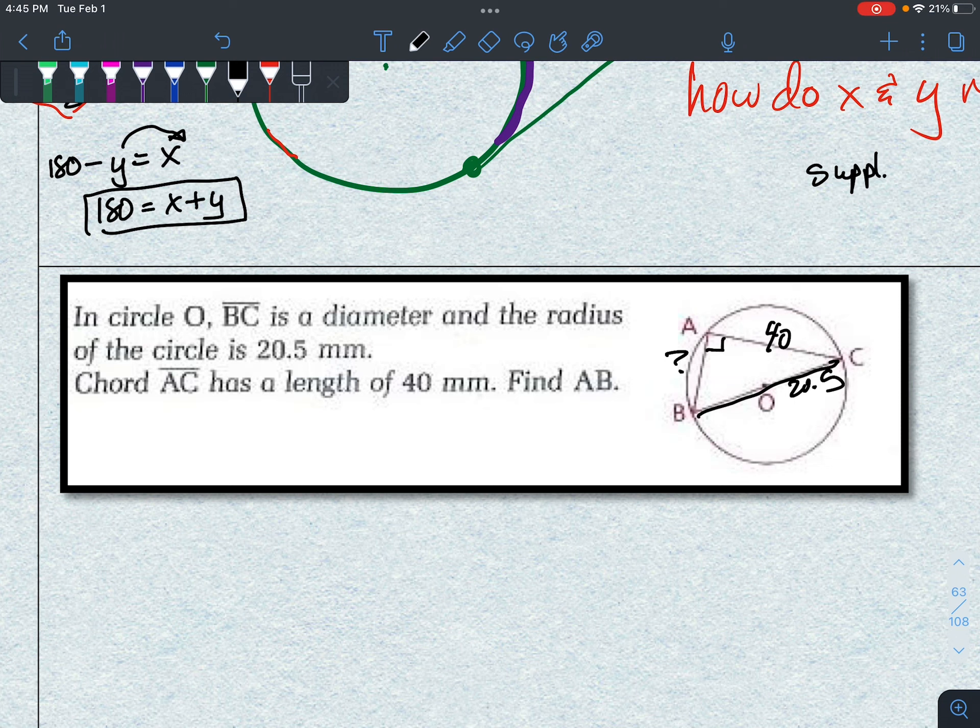Well guess what, that's a diameter, so that is a 90 degree angle. So I can do Pythagoras. So this side is also 20.5, so I got 20.5 squared, and I think x squared, if I call that side x, plus 40 squared equals 41 squared. I think this is a triple.